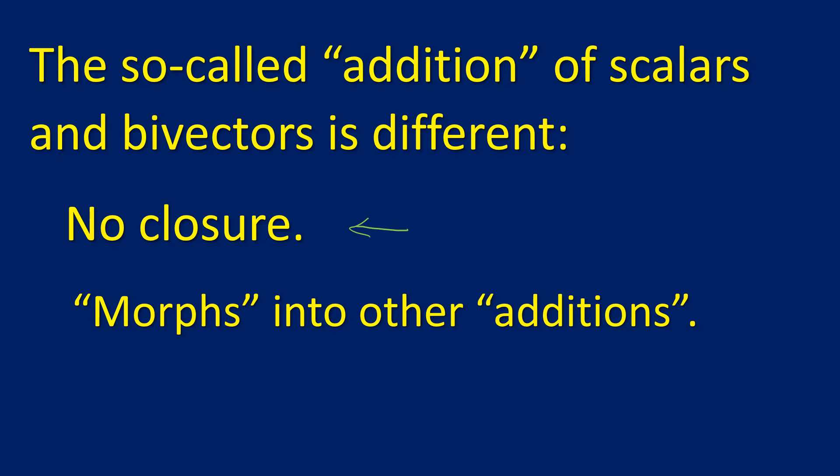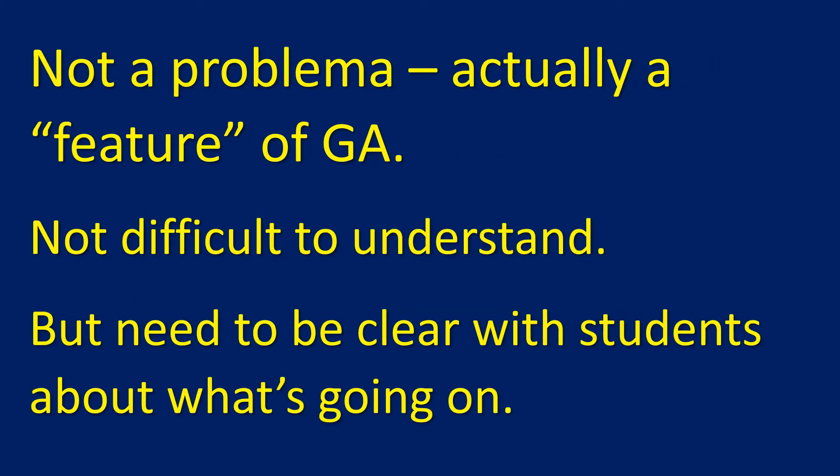The objections to that term are quite reasonable, not to the operation itself, but the use of that term raises certain expectations. One way this addition is different is it doesn't have the closure property. Vectors have closure property - add two vectors to get a vector. That's not what happens when we add scalars and bivectors. The other thing that's odd is it will morph into others in use, which is actually a feature of geometric algebra.